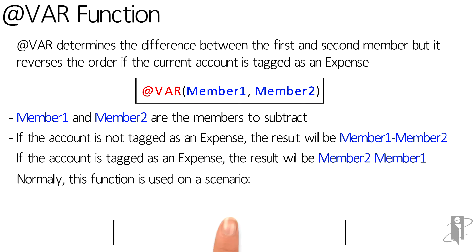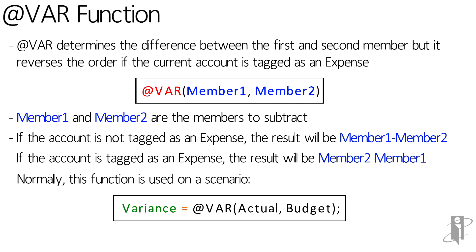Normally this is used on a scenario. You could say: variance equals ATVAR(Actual, Budget), and this is what happens inside of Sample Basic. You could theoretically use it on a non-scenario — for instance, a time dimension with a current year versus prior year member, where ATVAR might be CY comma PY. In revenue cases it takes current year minus prior year, and in expense cases it takes prior year minus current year.